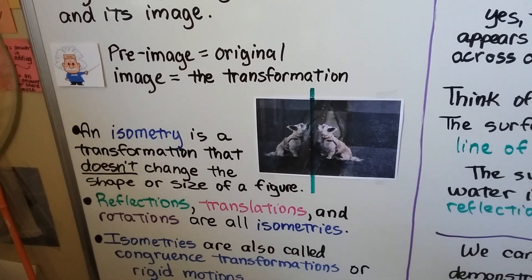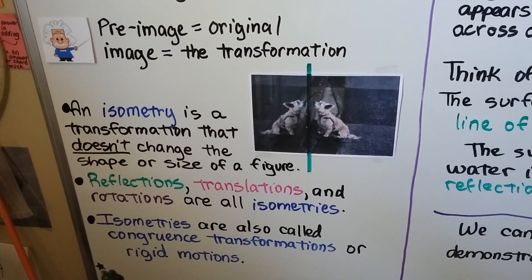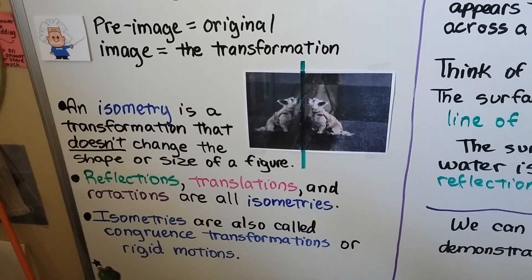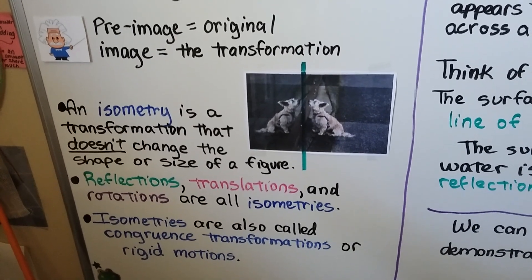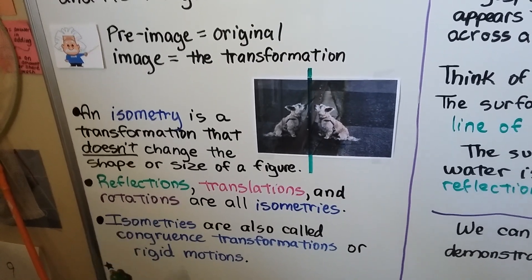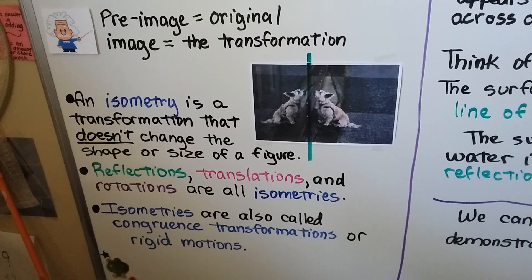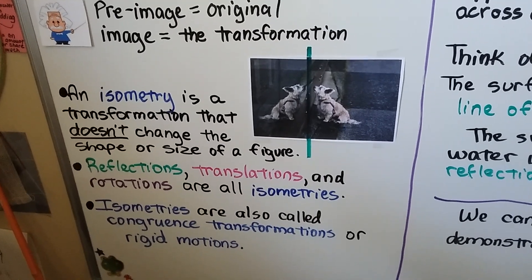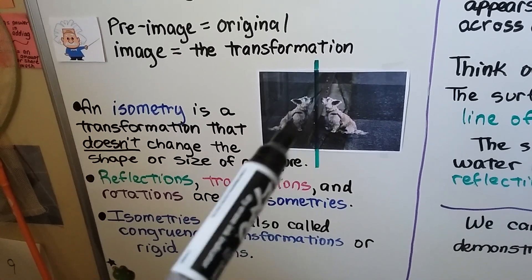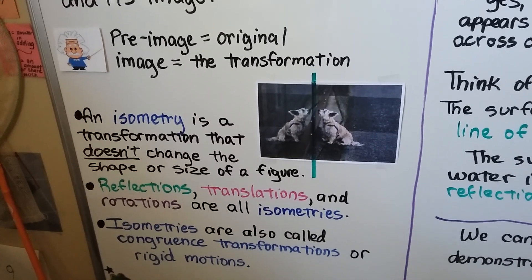An isometry is a transformation that doesn't change the shape or size of a figure. Reflections, translations, and rotations are all isometries — those are flips, slides, and turns. Isometries are also called congruence transformations or rigid motions. For example, the reflection of a dog in a mirror is an isometry because it didn't change in shape or size.